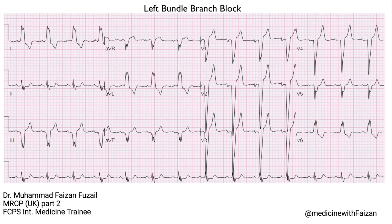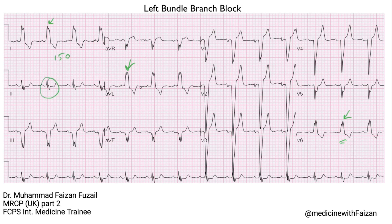Now let's look at an example. This is a 12-lead ECG where you can see some notching in Lead I, AVL, and V6. The transition is a bit late — you can see a QS pattern all the way across the precordium, and it's not until V6 where it becomes this typical positive upright notched pattern. The QRS complex is clearly wide, about 150 milliseconds. There is left axis deviation and absent septal Q waves in the lateral leads, and there is no R wave in V1 or V2 as well.